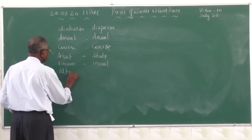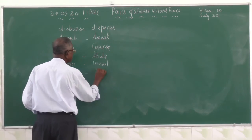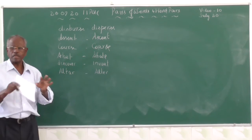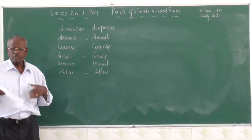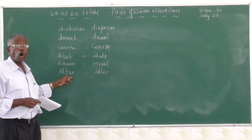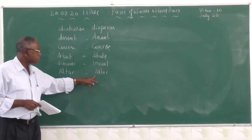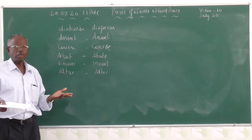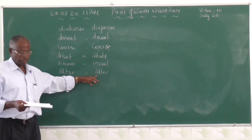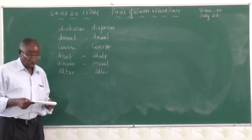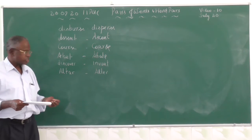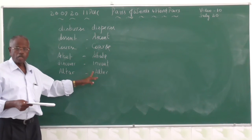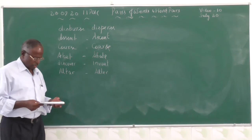Next is 'altar' and 'alter.' 'Altar' is a table on which a price or offering is made in a place of worship. 'Alter' means to change something. For example, the prayer is offered at the altar. The King of Monaco wanted to alter the sentence — meaning to change it.